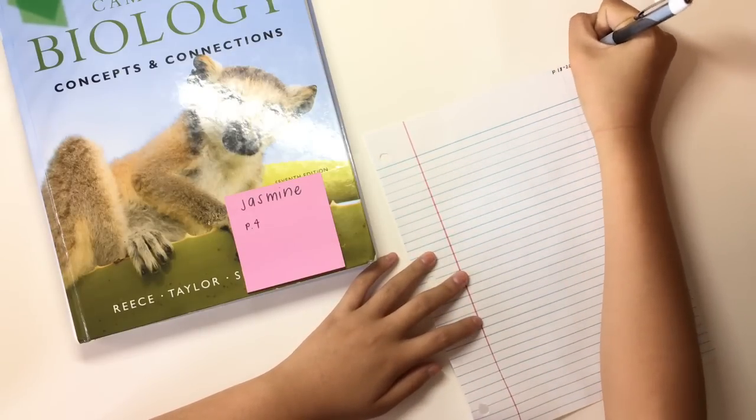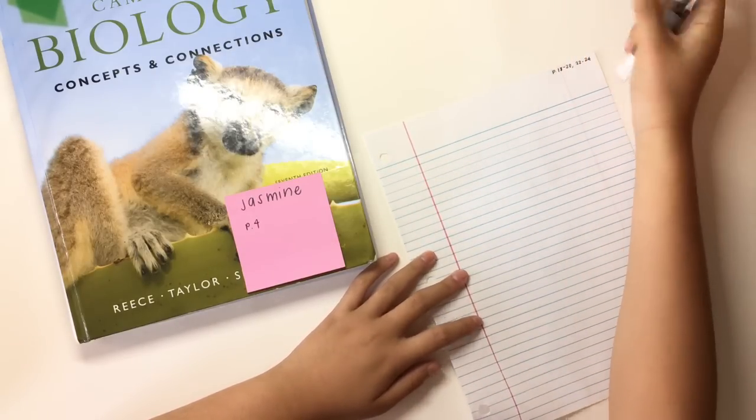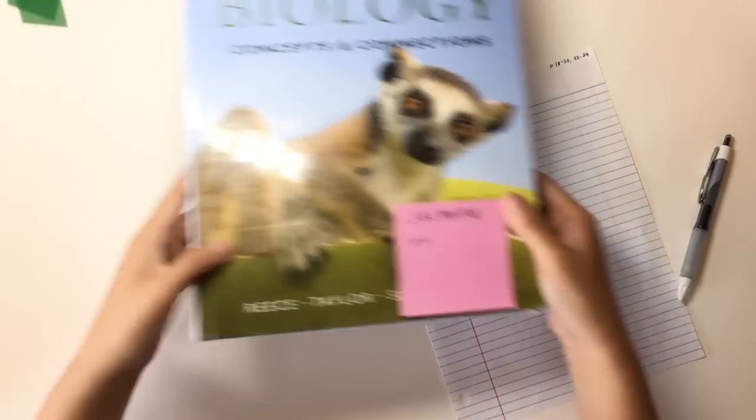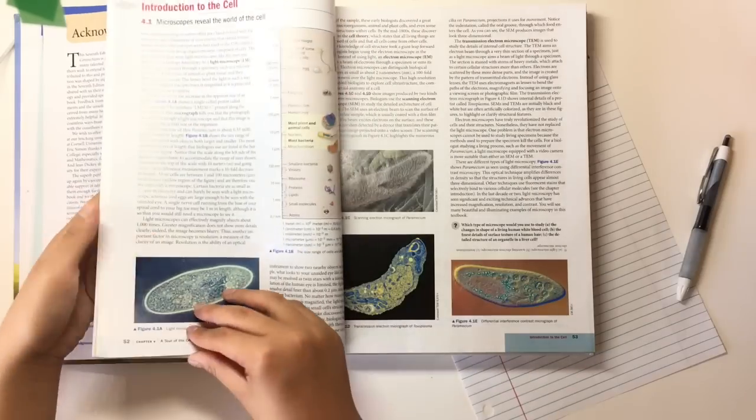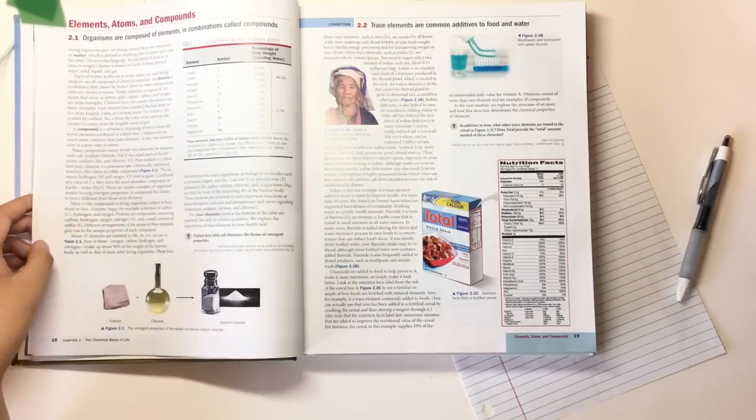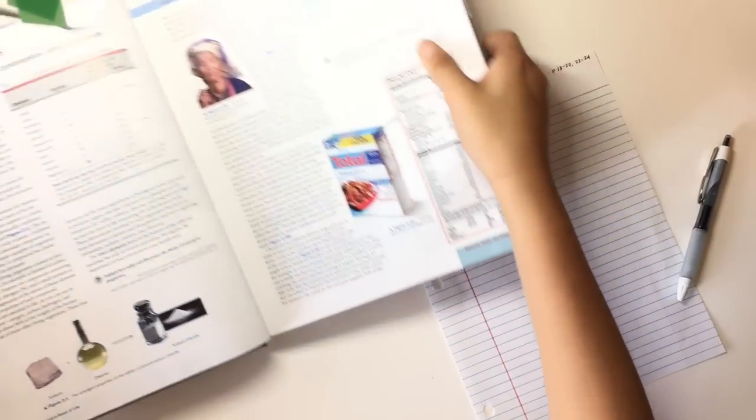So first I'm writing down the pages I'm taking notes on at the top of the page. By the way, if you were wondering what those little green things are in the top left corner, they're page flags that I stuck on the top shelf of my desk and I forgot to take them off before filming.